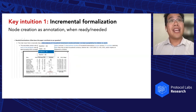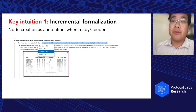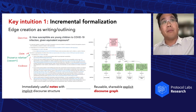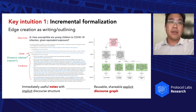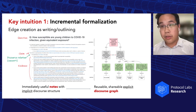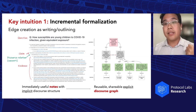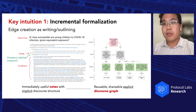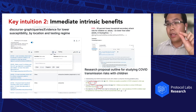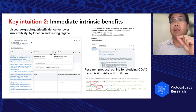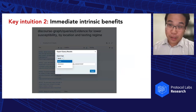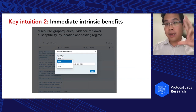This is accomplished by: node creation as annotation — we create nodes as we need them, as we're ready for them — and we create edges not by typing out properties necessarily, but by integrating them into our writing and outlining work. We have immediately useful notes with implicit discourse structure that the plugin parses into a usable, shareable, explicit discourse file, which you can export as CSV, JSON, or Markdown. We also provide immediate intrinsic benefits including structured querying and feedback on the level of development of particular ideas. You can export nodes into open standards-compliant things like Neo4j representations of nodes and edges.